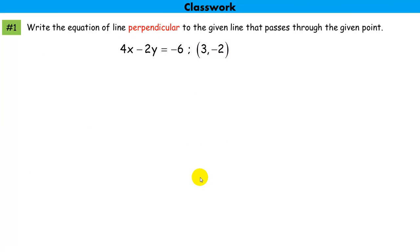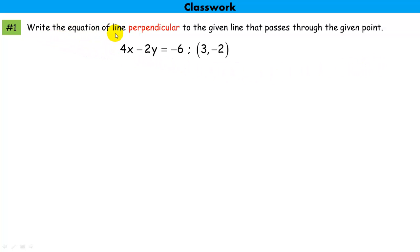Our first problem says: write the equation of a line that's perpendicular to the given line and that passes through the given point. So if you want to try it first, go ahead. The important thing is to understand what the problem is saying — write the equation of a line in slope-intercept form, but it has to be perpendicular to this line and it has to go through this point.